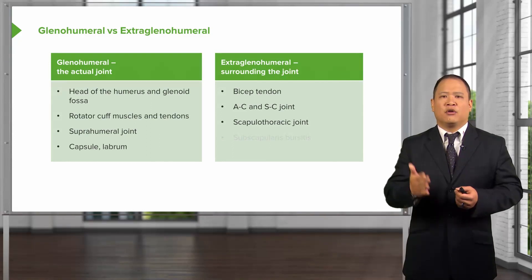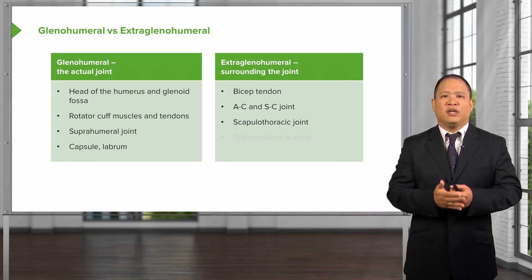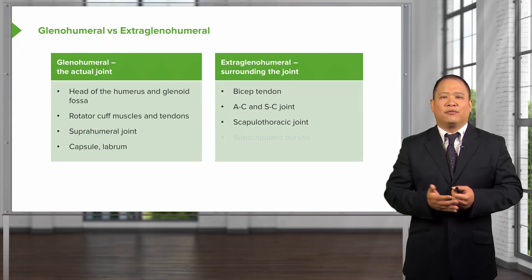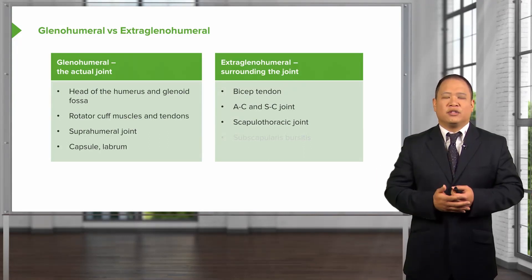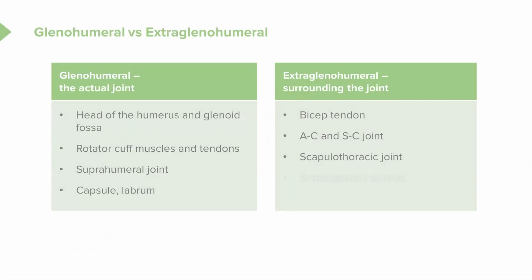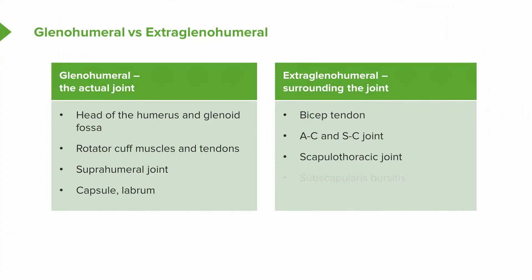The scapulothoracic joint involves the motion of the scapula on the thoracic region. We need five degrees of motion at the scapula for every 15 degrees of shoulder joint motion. If the scapula is restricted, matted down, or has muscle spasm that prevents it from moving on the thoracic area, that could cause shoulder pain. The subscapularis bursa is also outside the glenohumeral joint — if it is inflamed and irritated, it can cause pain every time you try to move the joint.